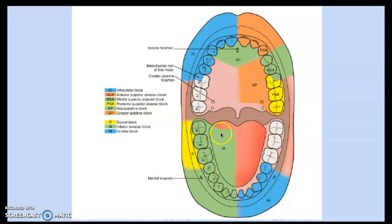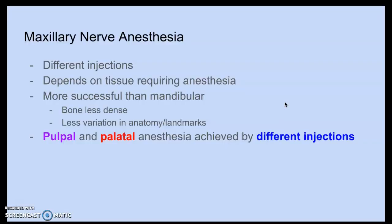The IA block anesthetizes part of the tongue, the IO block does the infraorbital area, and the buccal block just does the buccal part. Maxillary anesthesia has different injections depending on the tissue requiring anesthesia. It's more successful on the maxillary than the mandibular because the bone is much less dense and there are fewer anatomical variations.